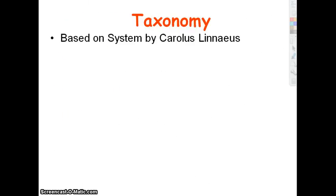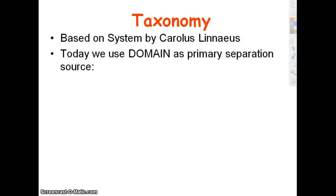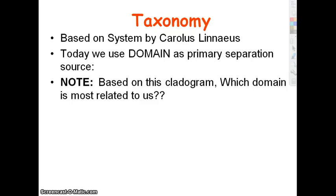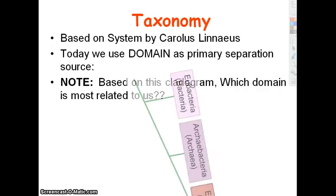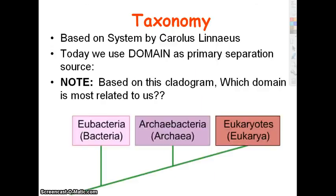Another way to look at levels of organization is taxonomy — those levels you learned: kingdom, phylum, class, et cetera. The biggest one is domain; everything belongs to a particular domain. Originally kingdom was the highest level, but as we discovered more and more differences between organisms, we needed a level above kingdom. So domain is our separating level.